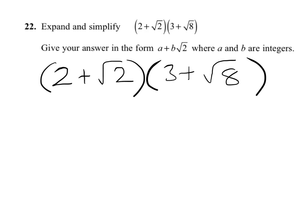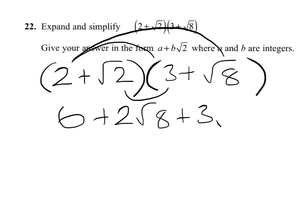So I'll start expanding. I'll start off with 2 times 3 is 6. 2 times root 8 is 2 root 8. 3 times root 2 is 3 root 2. And we've finally got root 2 times root 8.